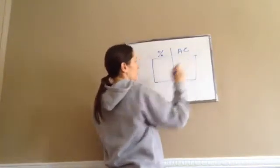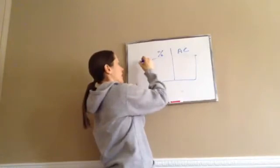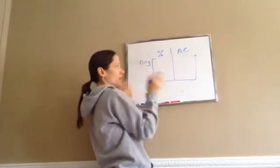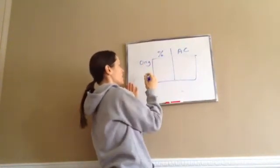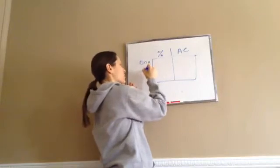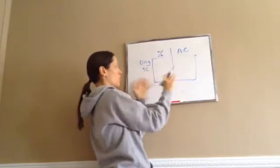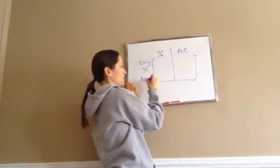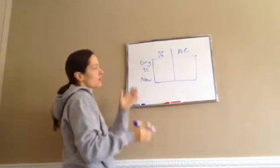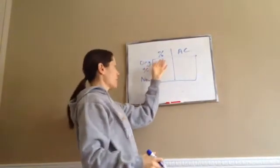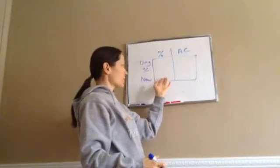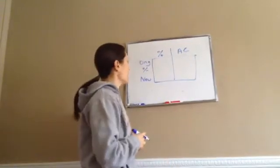Usually when you're working with percent, you're going to have an original amount or original percent and then you're going to go up or down. I don't know if you remember this chart and then the new price. Most of the time you'll use it with prices like 20% off. So you have the original and then you get 20% off. What's the new price?